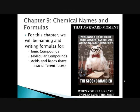We are going to start Chapter 9 on Monday, where we are going to learn how to write the chemical name and chemical formula for all the different types of compounds — ionic and molecular — that we've talked about so far, as well as acids and bases. In order to do that, we have to know some polyatomic ions.